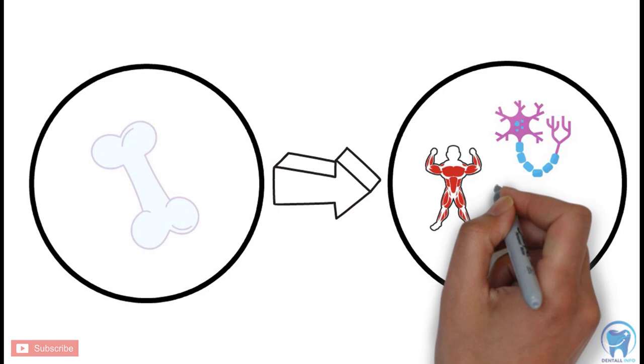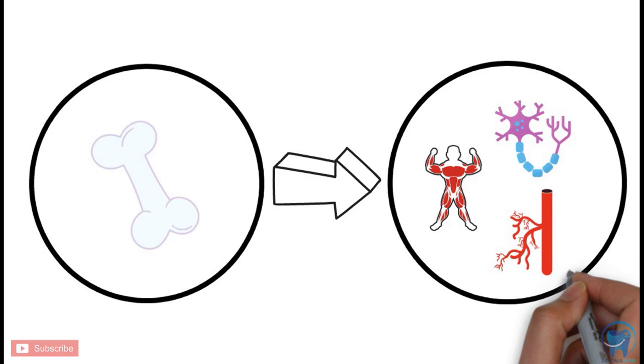What this theory explained was that the non-skeletal tissues had a direct influence on the skeletal tissues.